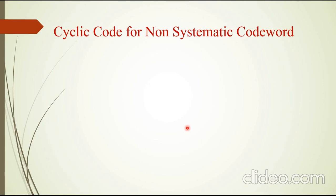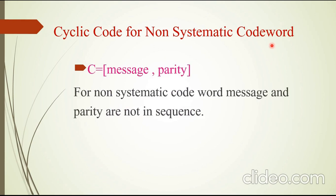Hello everyone. In this session I will be explaining cyclic code for non-systematic codeword. First of all, one should know what a non-systematic codeword is. A codeword is a combination of message and parity bits, so C — the codeword — is message and parity.